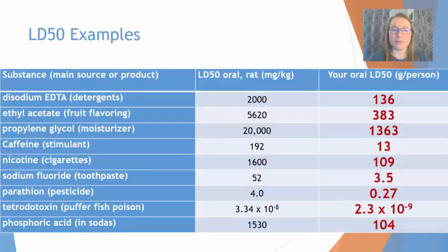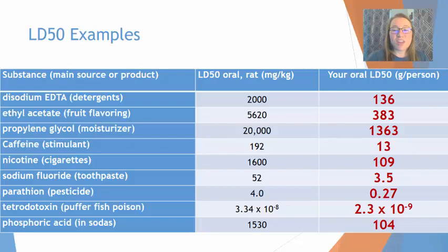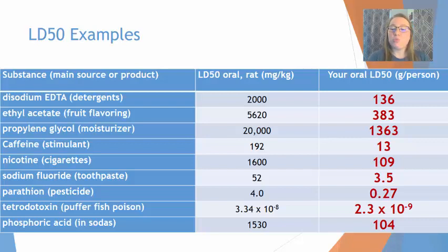For example, disodium EDTA has an LD50 in rats of about 2,000 milligrams per kilogram of body weight, which extrapolates to about 136 grams per kilogram of person. Smaller numbers are much more lethal — the smallest here is tetrodotoxin, which is pufferfish poison, at 2.3 times 10 to the negative ninth. The largest number is propylene glycol, often found in moisturizers, which has a relatively high LD50, meaning it is much safer.